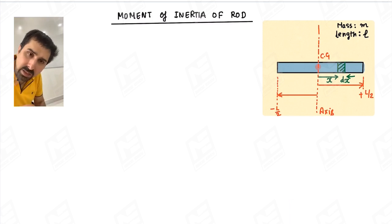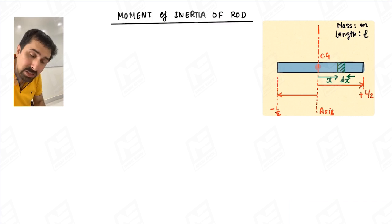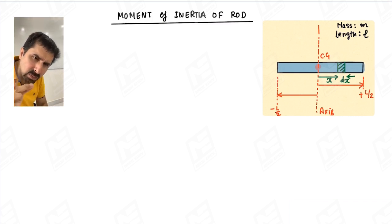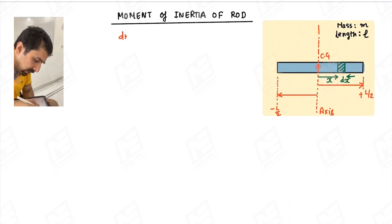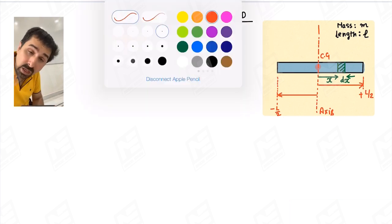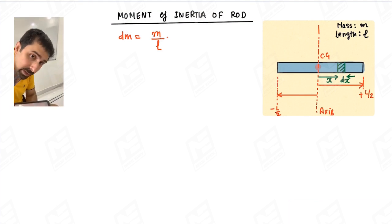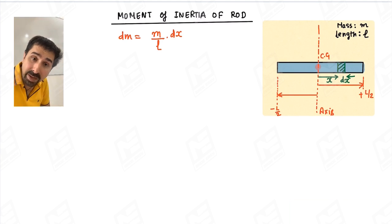We are going to treat it as a continuous mass system. As we can see in the diagram, at a distance x from the center we have taken a very small differential element. The mass of this differential element dm is equal to mass per unit length, which is m divided by l, multiplied by the element length dx.